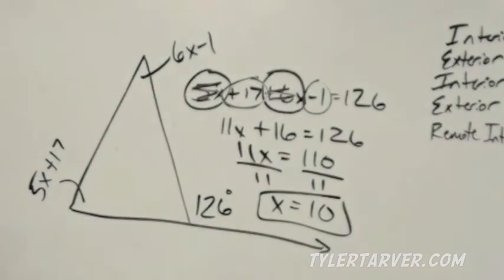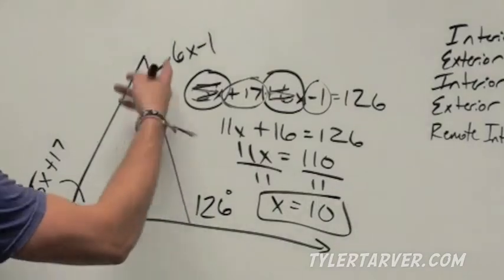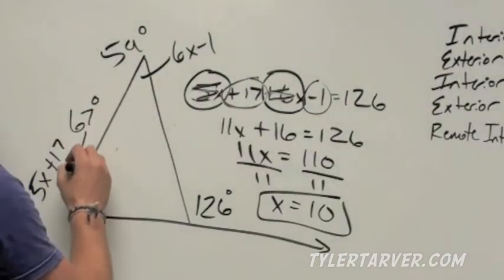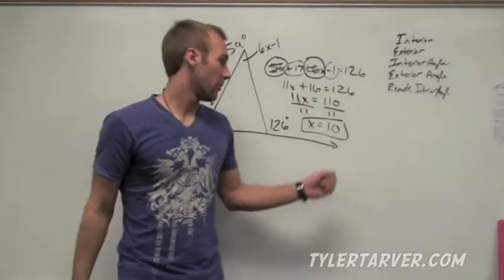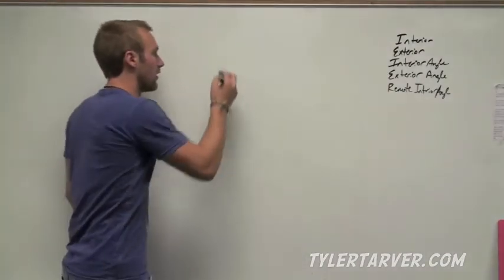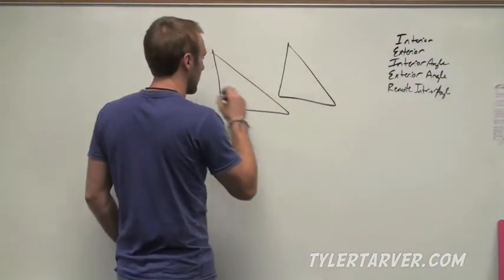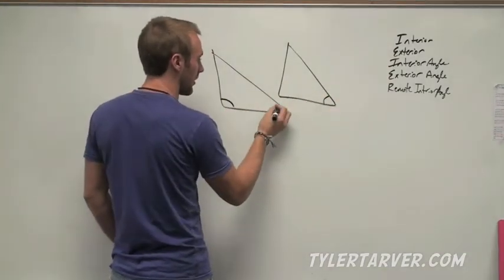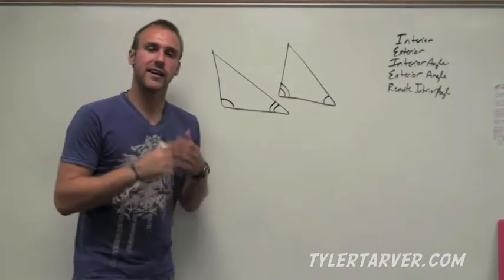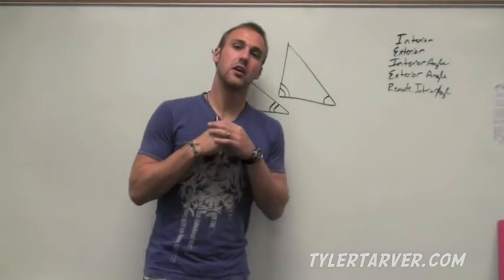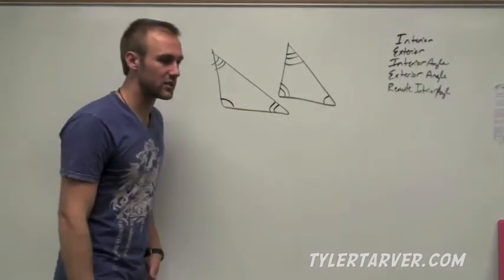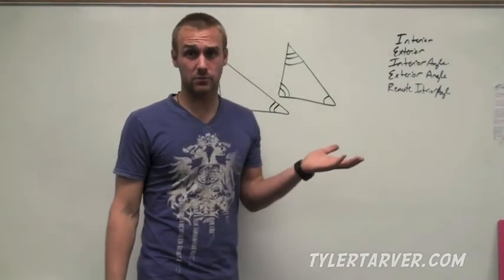If they're trying to find the actual angle measures, plug it in. 6 times 10 is 60, minus 1, so that's 59 degrees. And 5 times 10 plus 17 is 67 degrees. If they just want x, you're done. Last thing from this video: if you have two triangles and two pairs of angles that are congruent in two different triangles, guess what the third angle is? It's congruent as well. That's pretty common sense.